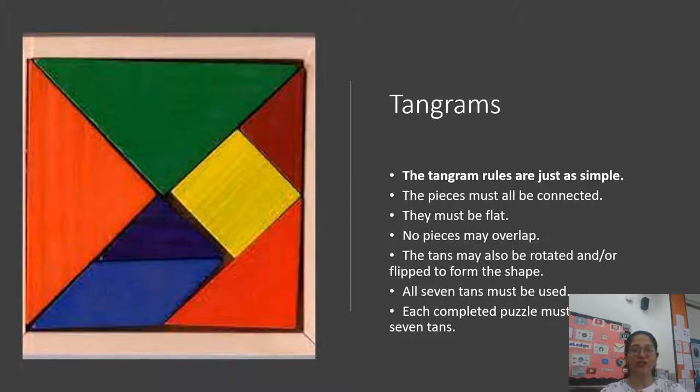Tangrams rules are just as simple. All the pieces must be connected. They must be flat. No pieces may overlap. The tans may also be rotated or flipped to form the shape. All seven tans must be used. Each completed puzzle must have seven tans all together.